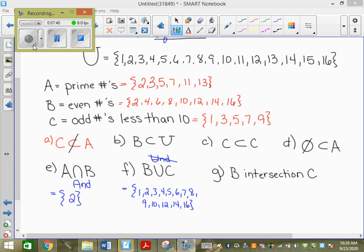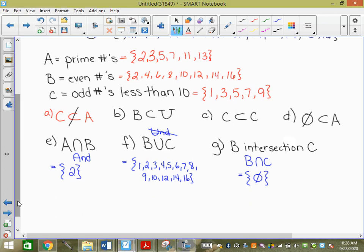B intersection C is B and C. And it's going to equal, what's in B and in C? It's the empty set. What can I then say about B and C? They're disjoint. So if the intersection of two sets results in the empty set, that means there's nothing in common. What can we say about those two sets, then? They're disjoint. So I can say that B and C are disjoint.